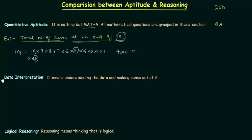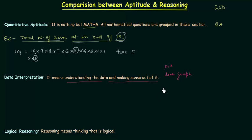Now we will move to the next part of this presentation: data interpretation. In data interpretation we have to understand the data and make sense out of it. You will be given a pie chart, some line graph, or simple graph — whatever is given to you — and you have to understand the data and make sense out of it.